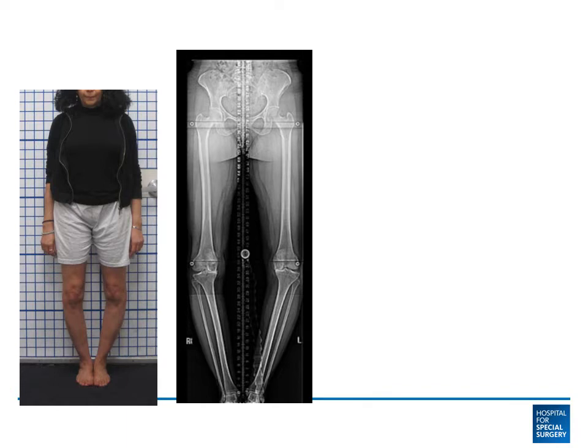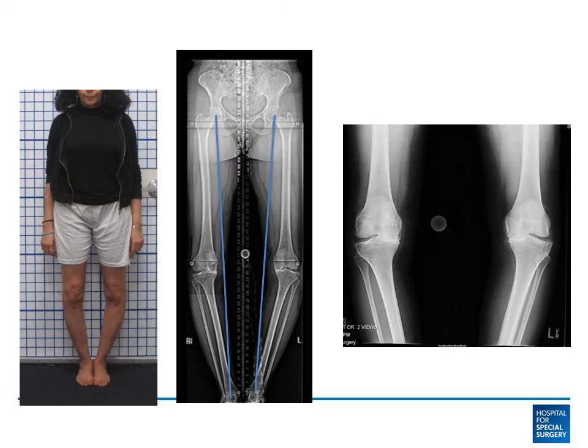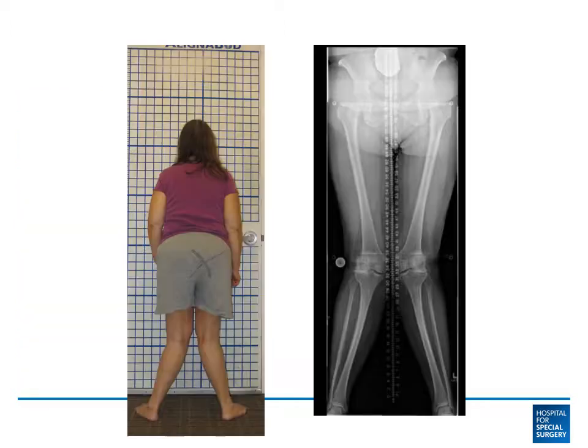Deformity overloads the respective compartments of the knee. For that reason, people with bow leg deformities develop medial compartment arthritis of the knee, as you can see here with bone on bone changes noted on the medial or inside part of the knee. And people with knock knee deformities develop arthritis on the outside part of the knee, or the lateral compartment.